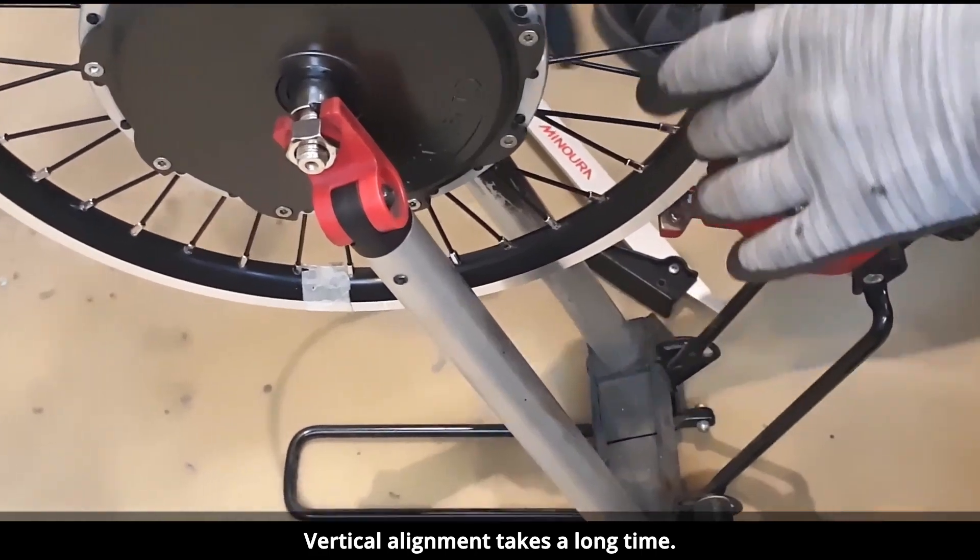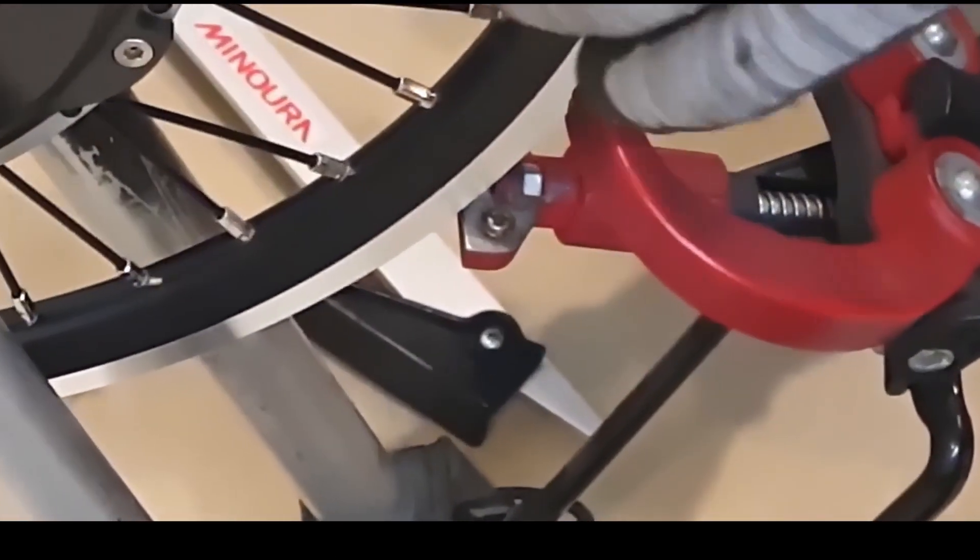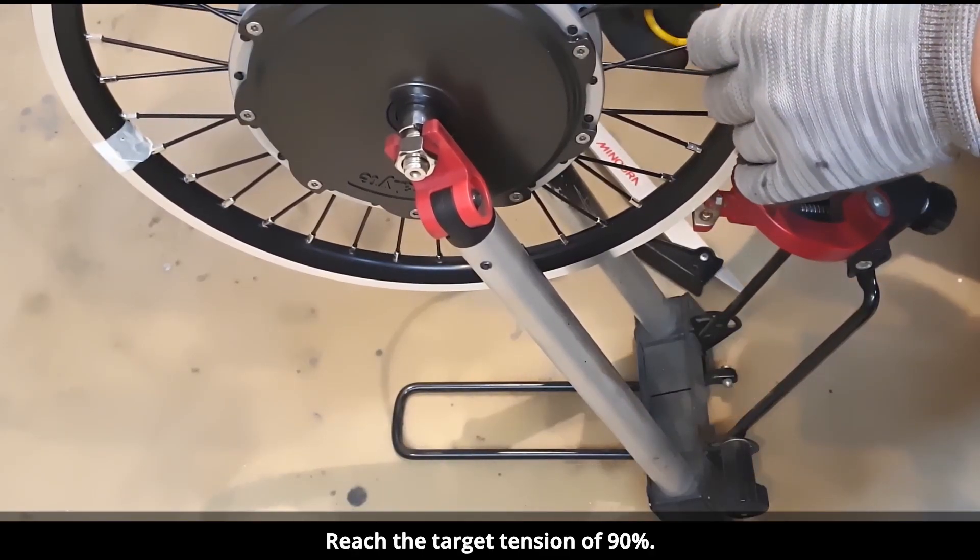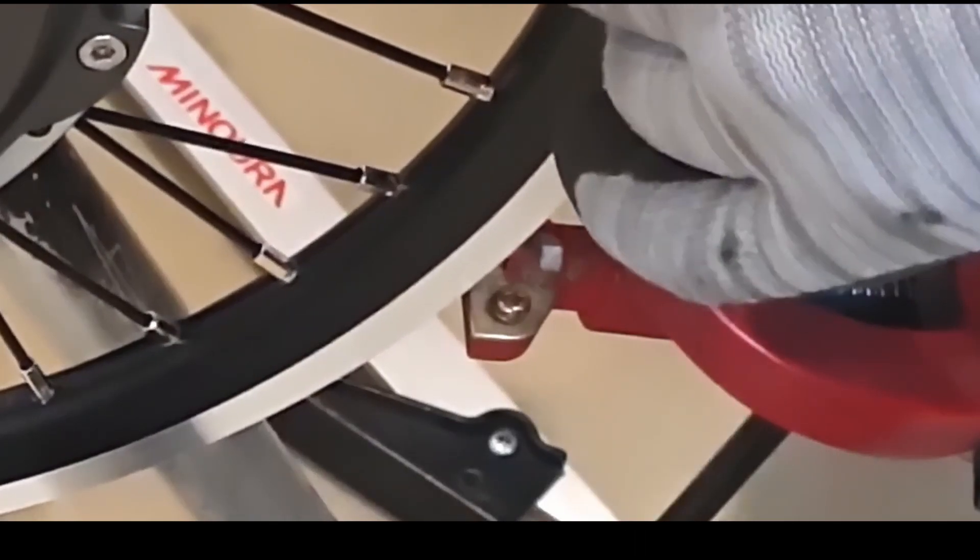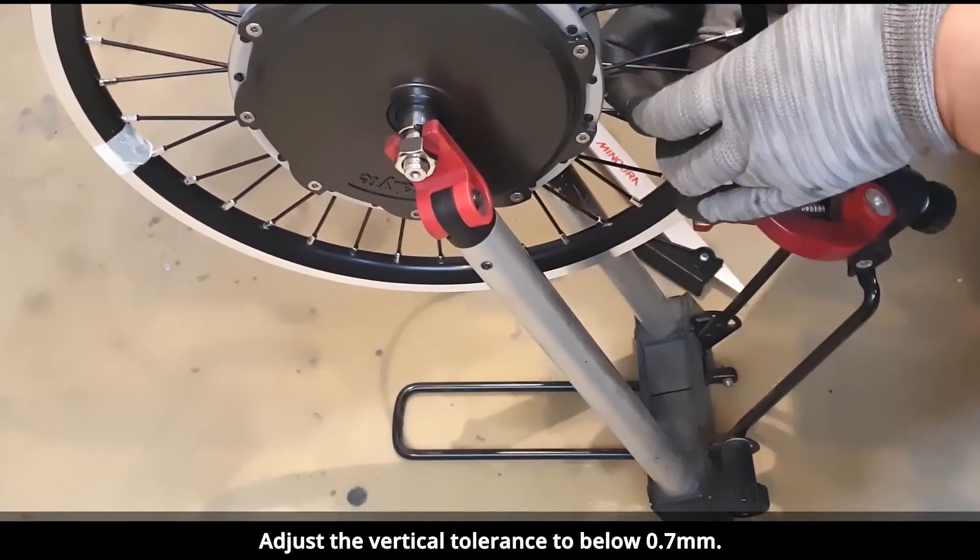Vertical alignment takes a long time. Reach the target tension of 90%. Adjust the vertical tolerance to below 0.7mm.